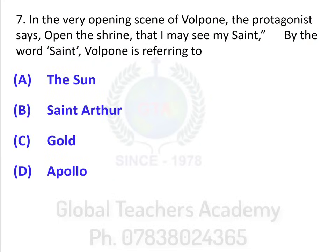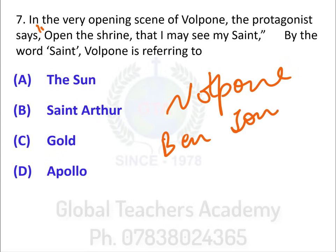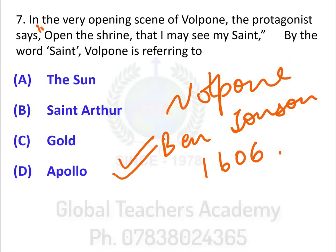Next question. In the very opening scene of Volpone, the protagonist says 'Open the shrine that I may see my saint.' By the word 'saint,' Volpone is referring to — ? Volpone is a text by Ben Jonson, a 1606 text. Ben Jonson is a very important playwright, often pitched against Shakespeare. He followed the Aristotelian unities to the letter, and Samuel Johnson in his Preface to Shakespeare discusses Ben Jonson in contrast to Shakespeare. You must also know the detailed summary of The Alchemist and Volpone. In the opening, Volpone says 'saint' about gold.